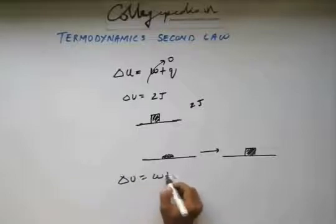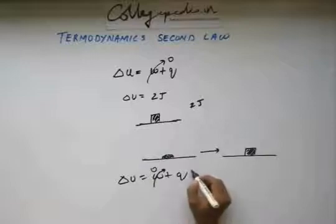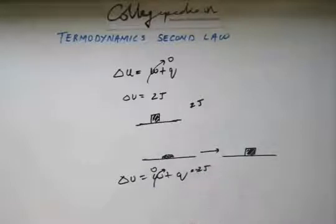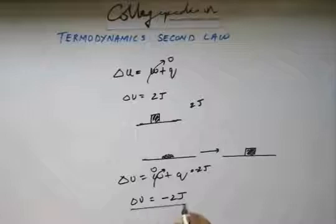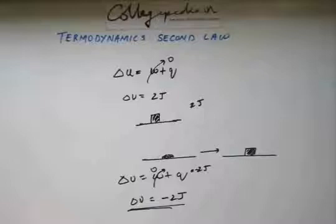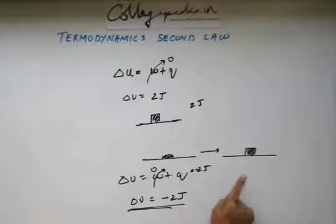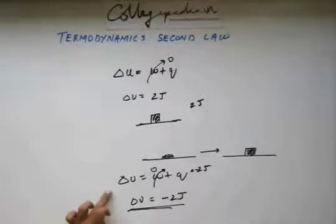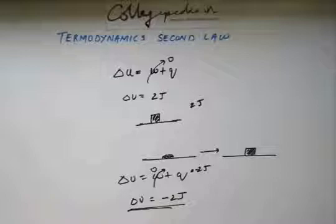So, thermodynamics first law will do some calculation given this work is zero and given this Q is equal to minus two joules because the water is releasing some energy out. So, thermodynamics first law will tell you that the change in internal energy of your ice cube is minus two joules. But that's wrong because this ice cube will never be formed and this water spontaneously will never change into ice cube. But even if the process is hypothetical, the thermodynamics first law entertains you and tells you that the energy of the ice cube is minus two joules. So, this is wrong because if the process is not happening, we shouldn't talk about the exchange in energy and we shouldn't talk about the internal energy in this hypothetical process.